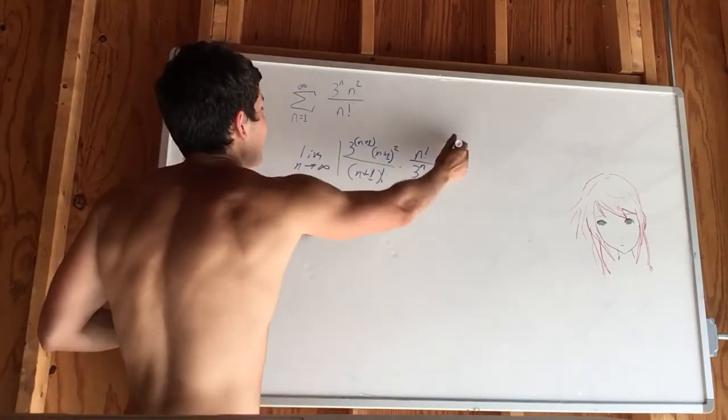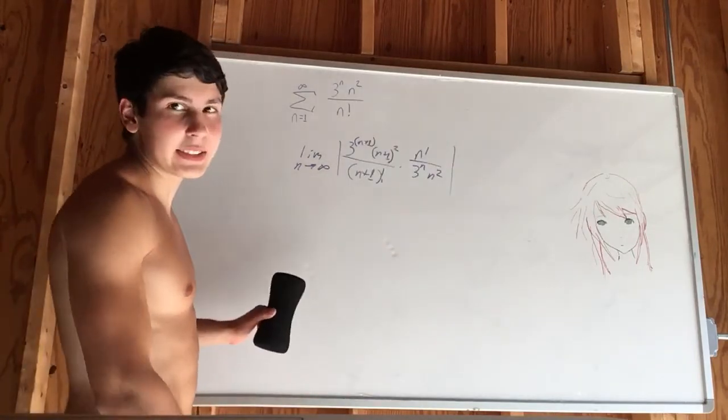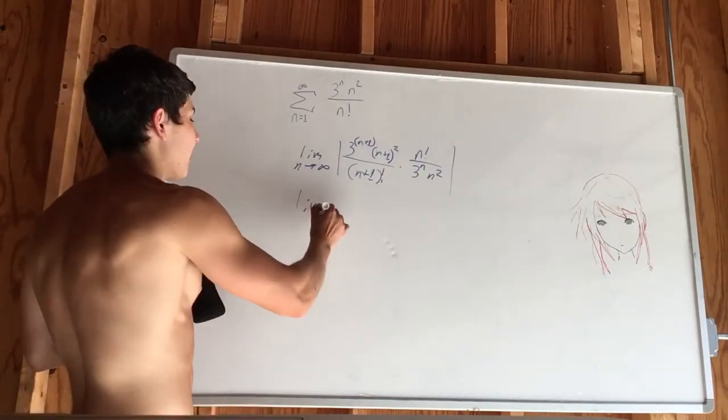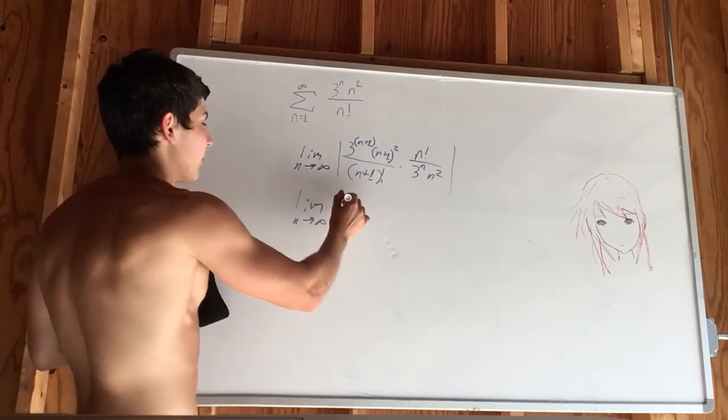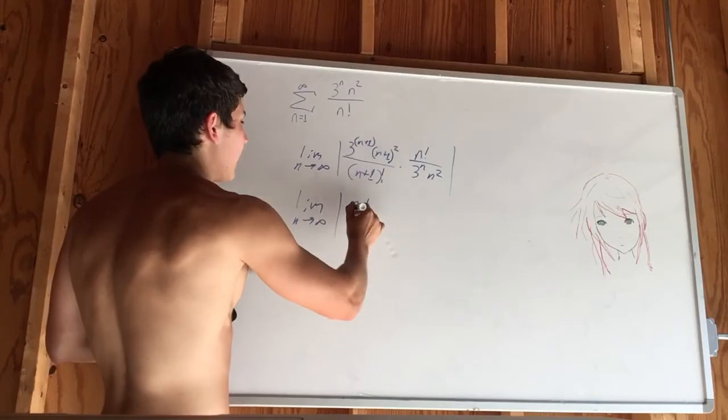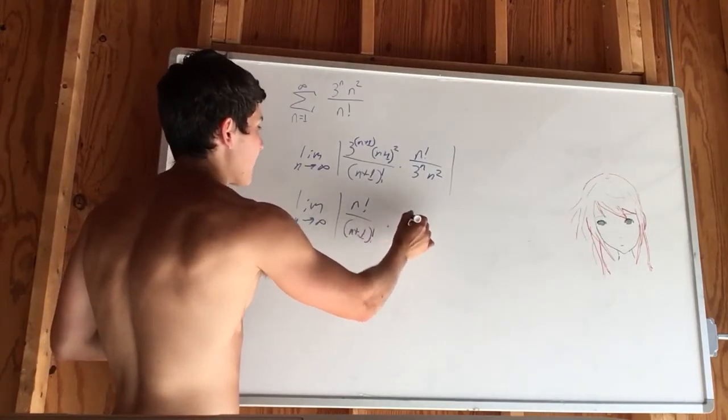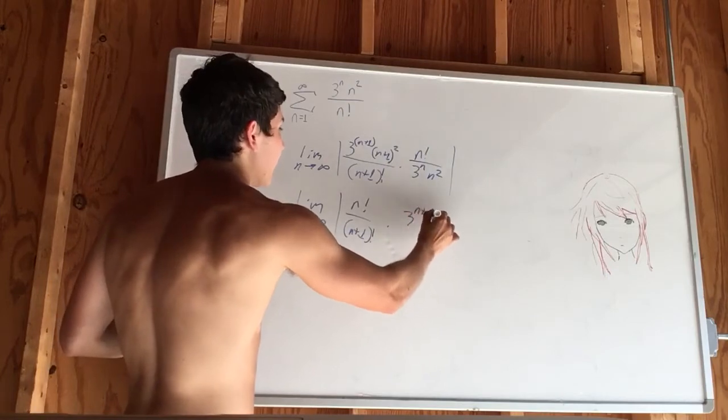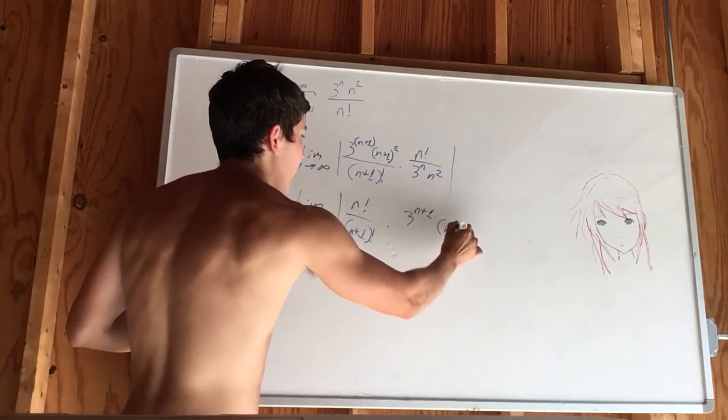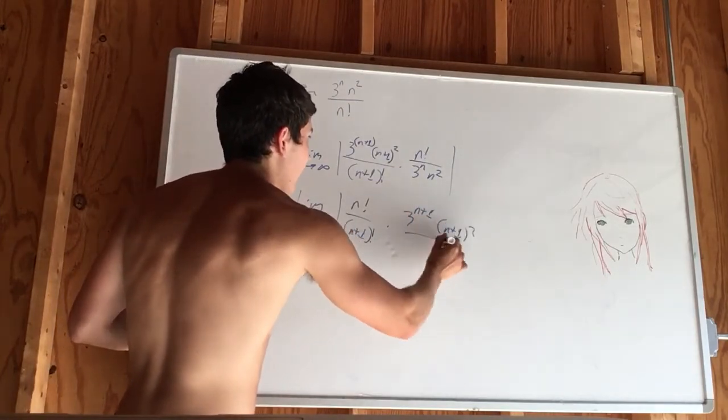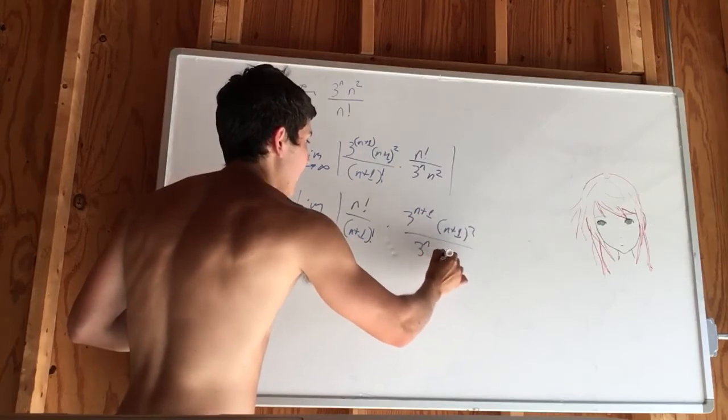We would like to group things together that look similar. So we're going to group them: limit as n approaches infinity of n factorial over n plus 1 factorial, times 3 to the n plus 1 times n plus 1 squared, over 3 to the n times n squared.